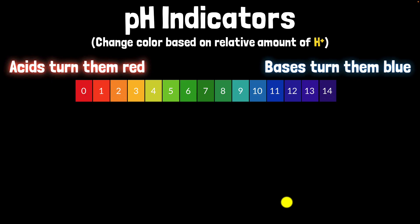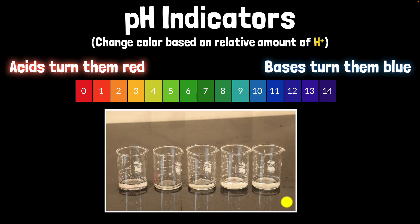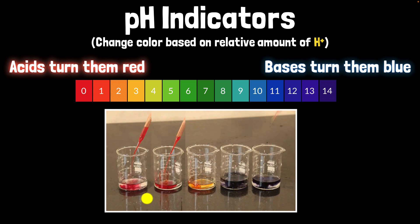And similar to the pH papers, we also have universal indicators. And this is what we saw at the beginning of the video. Again, let's have a look and let's see the color changes. Beautiful, isn't it? Again, we can see that these are very acidic. This one is yellowish, which means it's also acidic, but it's less acidic than these two. And then we have very basic solutions over here.